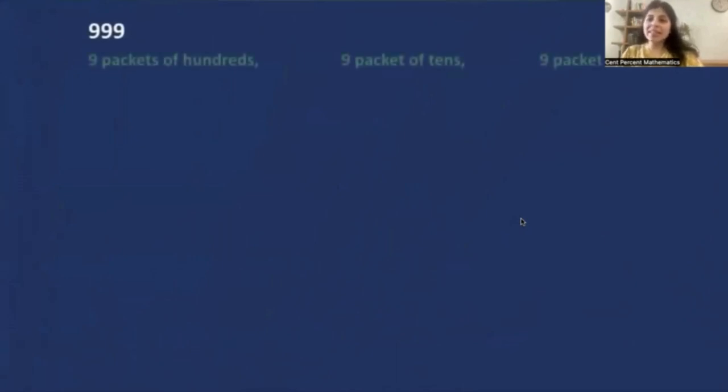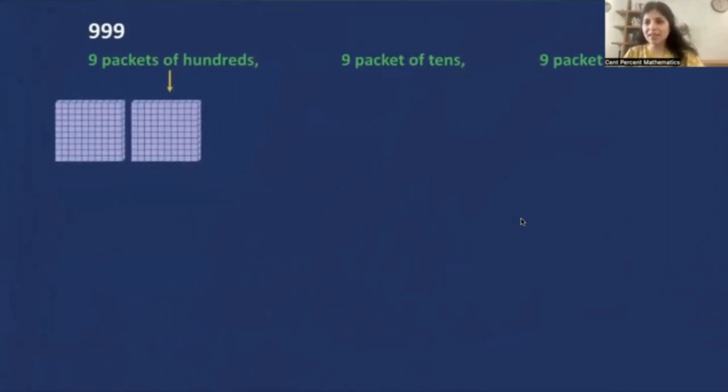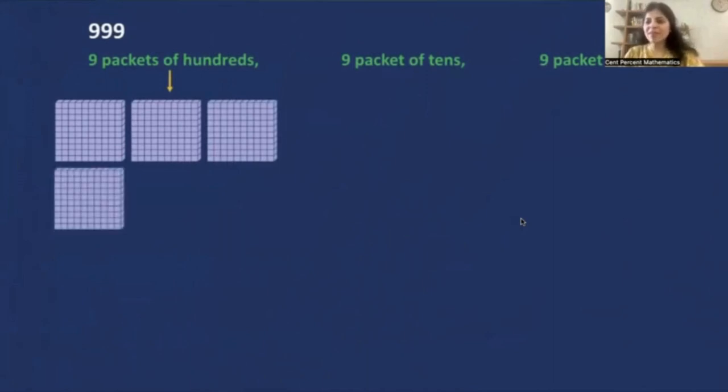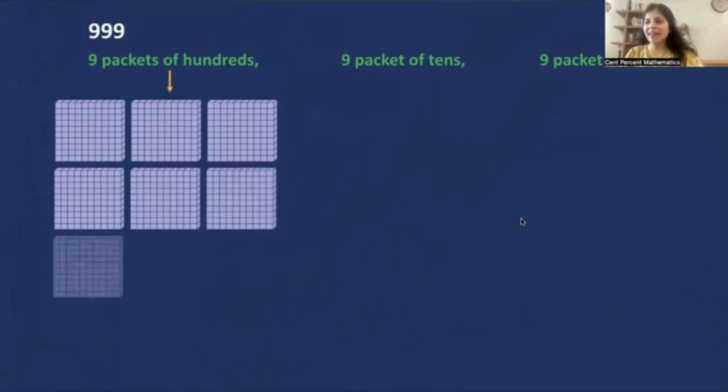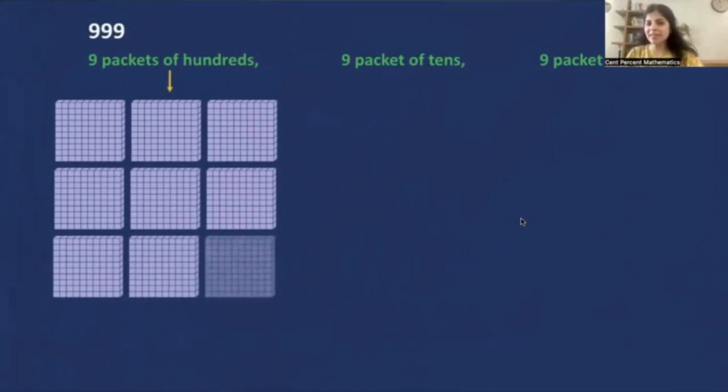How do you visualize 999? So there are 9 packets of 100s, 9 packets of 10s, and 9 packets of 1. So we have 9 of 100, and 9 of 10, and 9 of 1. That makes it, I'm sure you all can guess it now, that is 9 times 100, plus 9 times 10, plus 9 times 1.